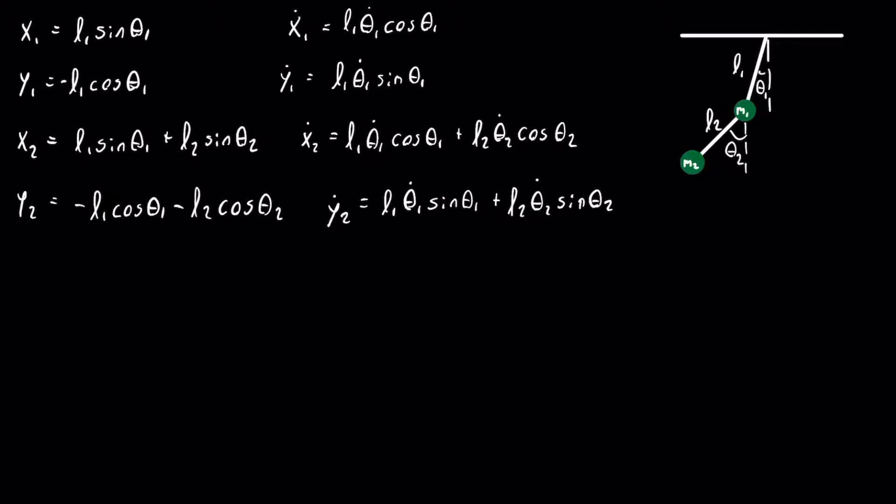Now, we pretty much have everything we need to form the kinetic energy of the system. The kinetic energy is going to be equal to 1 half m1 v1 squared plus 1 half m2 v2 squared. Straight from the Pythagorean theorem, we know that the velocity squared is going to be equal to the sum of the components squared. This means that v1 squared is equal to x1 dot squared plus y1 dot squared.